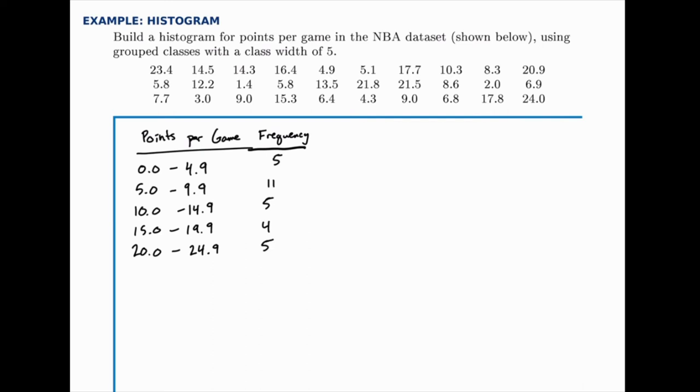Here we'll build a histogram using the data set for the players in the NBA with their points per game listed here. In the last example we built a grouped frequency table and now we're going to build a histogram that matches it. So we're going to take the frequency table we built earlier and just draw this histogram to represent the same picture.